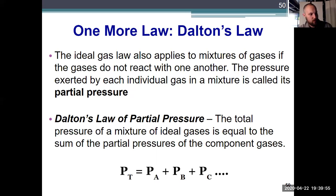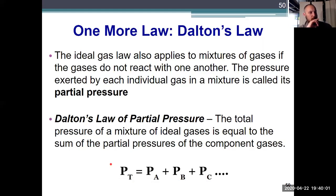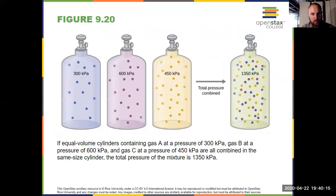And that idea is summarized by Dalton's Law of Partial Pressures. The total pressure, P sub T here for total, is equal to the sum of the partial pressures of the component gases. However many there are. If there are three, PA plus PB plus PC. If there are seven, you just add all seven together to get the total pressure. We see what that looks like in a picture right here. If I have three individual gases at a fixed volume here, 300, 600, and 450 kilopascals, add them all together, the total pressure is just the sum of those individual pressures. 600 plus 300 plus 450 is equal to 1350. The total pressure is the sum of each of them, provided they don't react with one another.